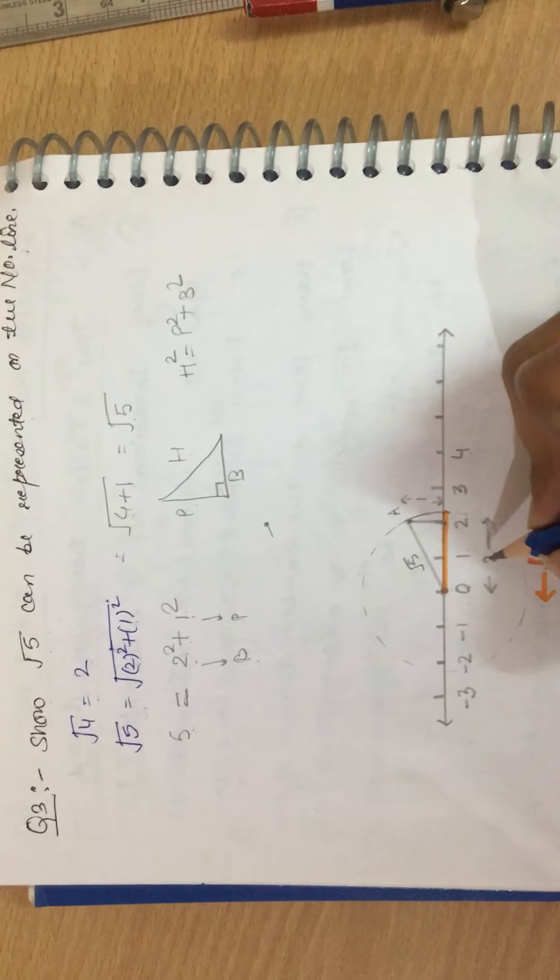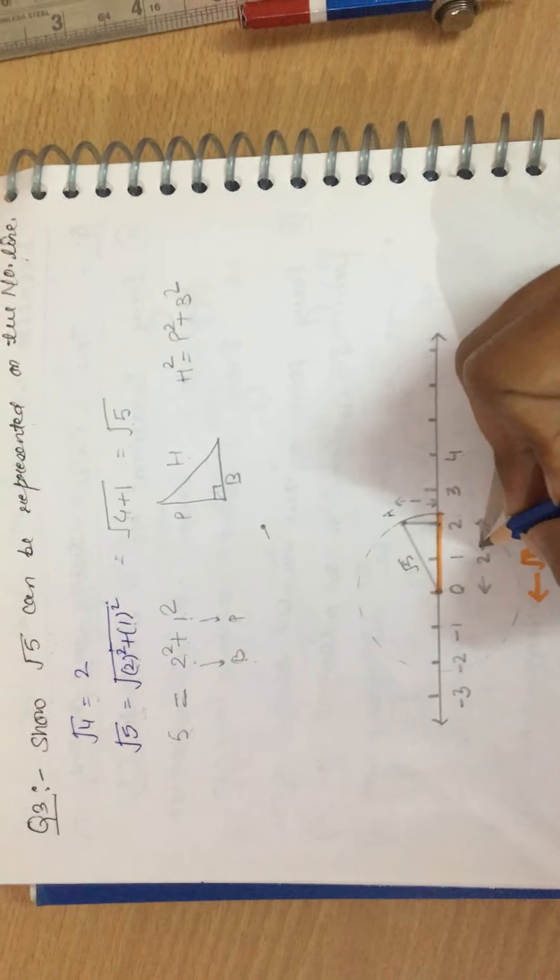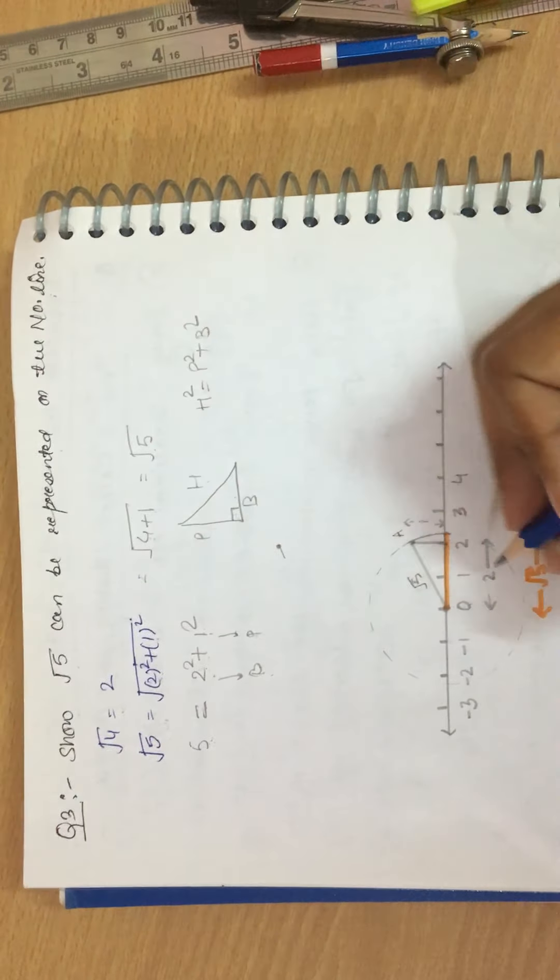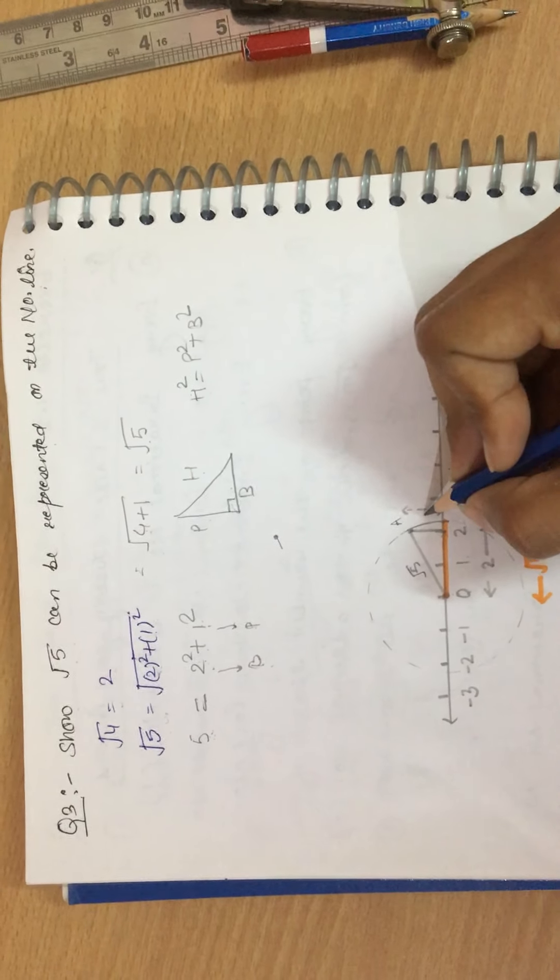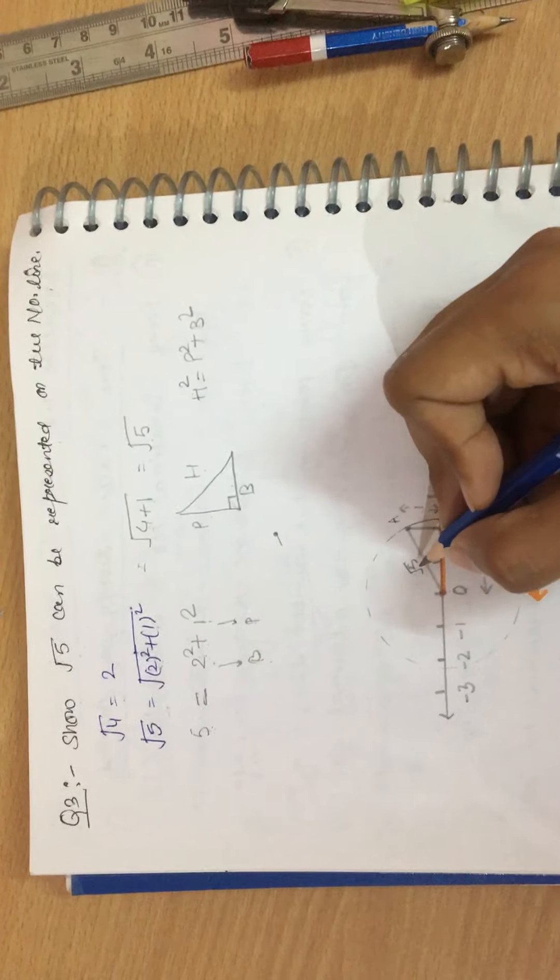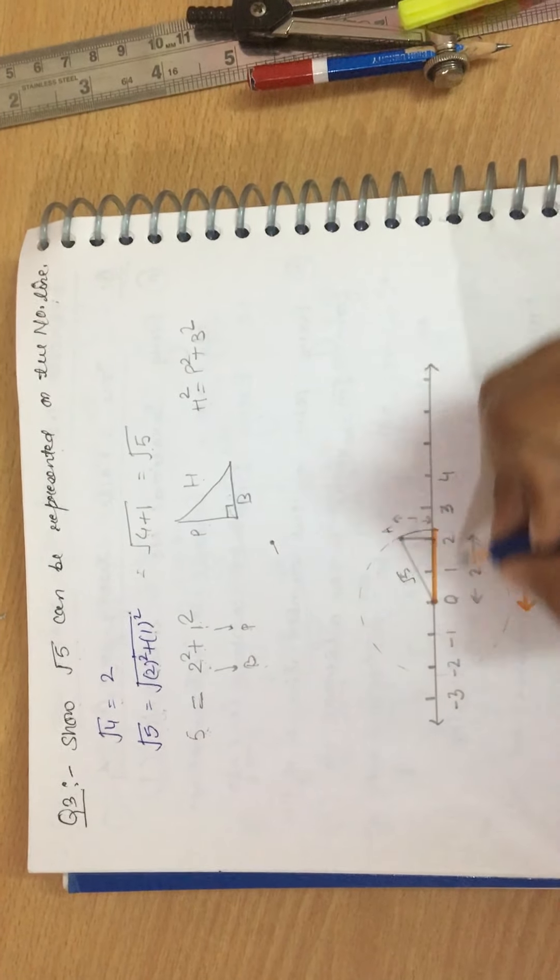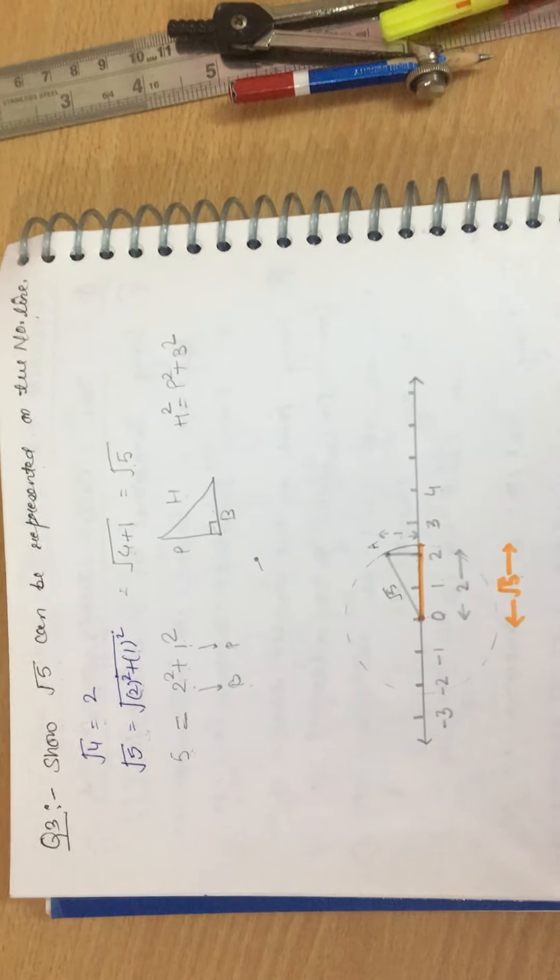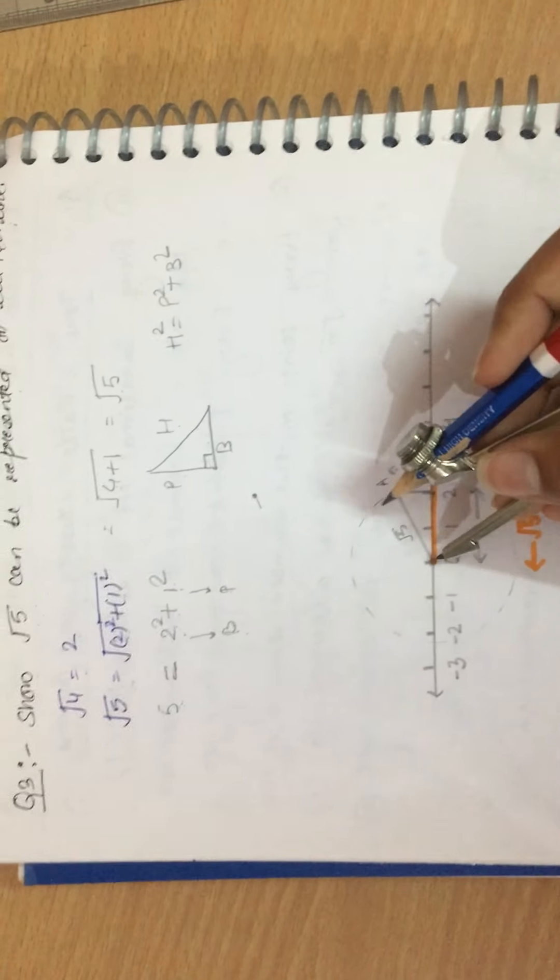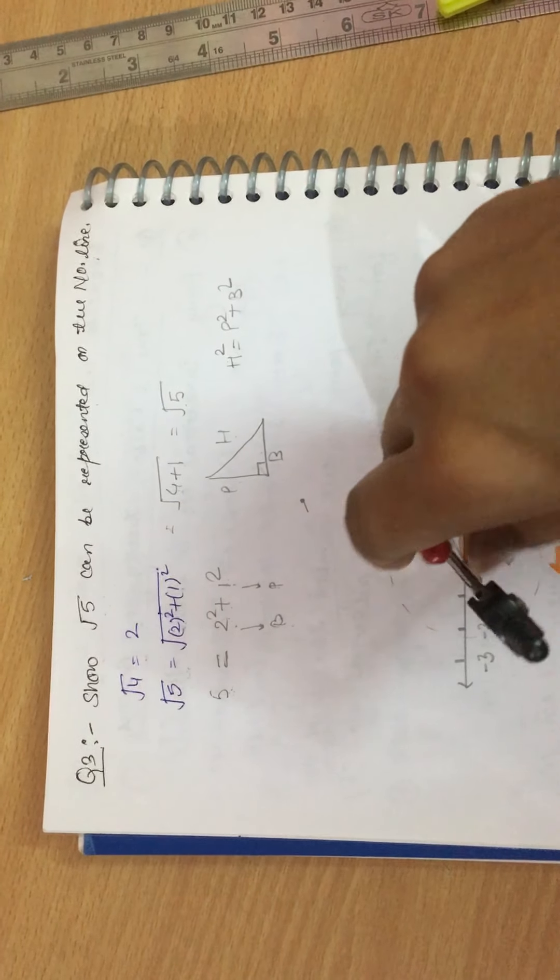We can take a line from here, one centimeter, zero to point A, which is under root five. Because this is one unit, this is two, this is one. So this triangle will satisfy this, two square means four, one square means one, so four plus one equals five, under root five.